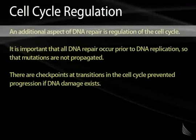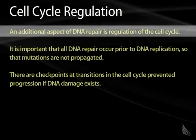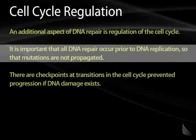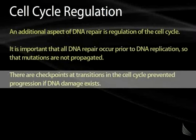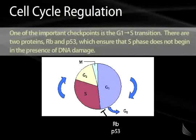An additional aspect of DNA repair that needs to be considered is the regulation of the cell cycle. It's important that DNA repair occurs prior to DNA replication; if it doesn't, mutations will get replicated and propagated in all daughter cells. There are checkpoints in the cell cycle which prevent progression if DNA damage exists. One major checkpoint is the transition from G1 to S phase, where two proteins — RB and P53 — ensure that S phase doesn't begin until all DNA damage has been repaired, blocking progression so that mutations are not propagated.